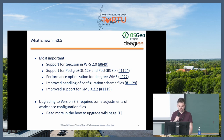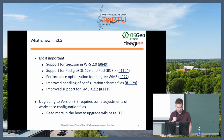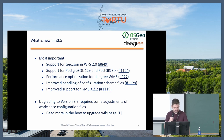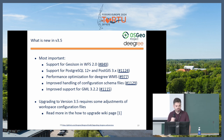The most important features are support for GeoJSON in WFS 2.0 — and OGC API features supports that as well — support for PostgreSQL 12+ and PostGIS 3.x. We also did many performance optimizations for Degree WMS, improved handling of configuration files, and improved support for GML 3.2.2. Upgrading to version 3.5 requires some adjustments in the configuration, so if you're still using Degree 3.3 or 3.4, you need to read the wiki page.